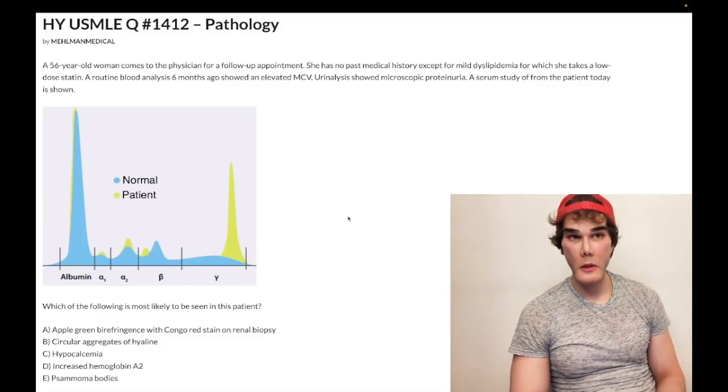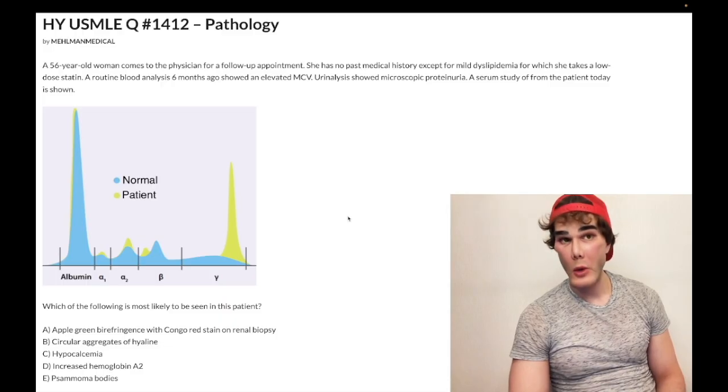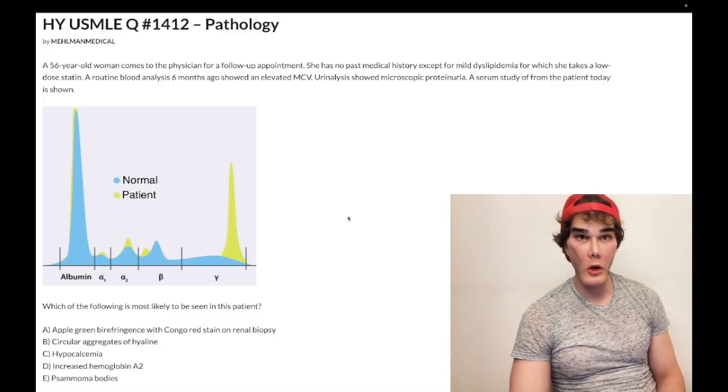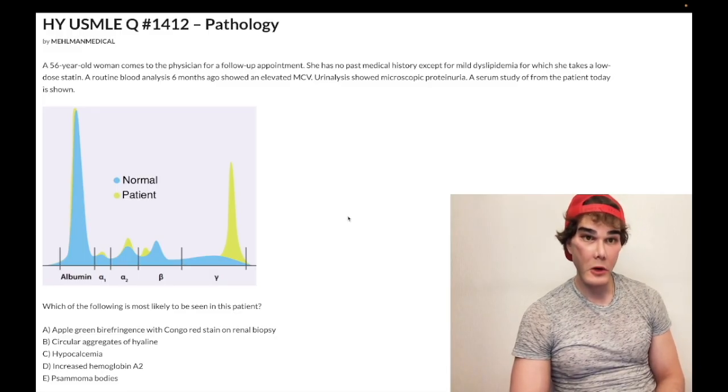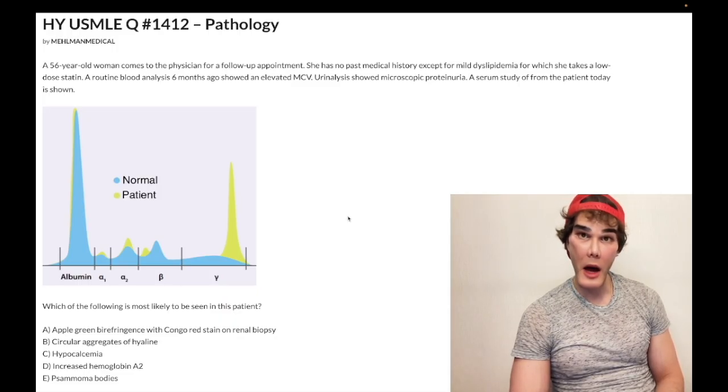How's it going guys? We have a medium difficulty question for a path for the different steps here. We've got a 56-year-old woman who has multiple myeloma, so we're looking at a serum protein electrophoresis here where you can see that the gamma region spike, that's your M protein spike. M means monoclonal, and it's going to be an IgG kappa lambda immunoglobulin light chain spike.